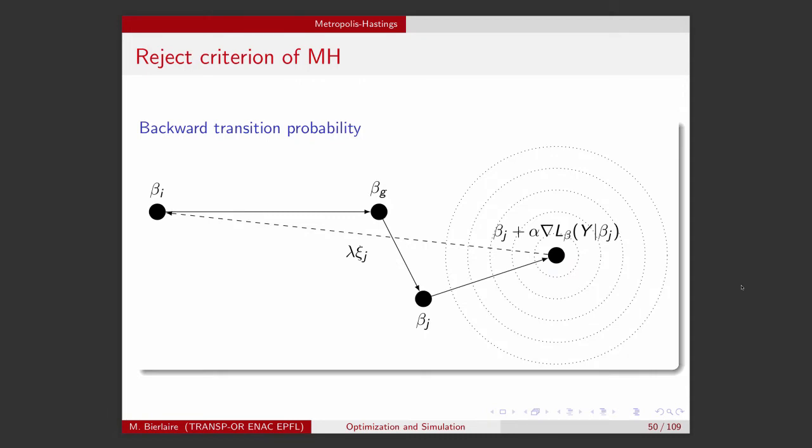So let's use the same picture. So I started from beta_i, I went to beta_j, and then to beta_j. Now let's assume that I am at beta_j, and let's apply the process again to see how can I go back to beta_i.